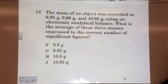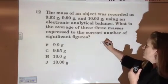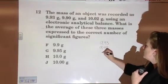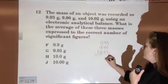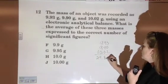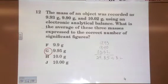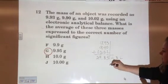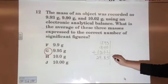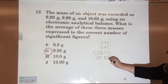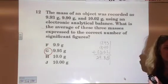Next one. The mass of an object was recorded as 9.93, 9.90, and 10.02 using an electronic analytical balance. What is the average of these three masses expressed in significant figures? G. 9.93, 9.90, 10.02. Add them. 29.85. Divided by 3 will give you 9.95. Is the 0 in 9.90 significant? Yes. When we add significant figures, if we add, we are looking at decimal places. If we had something over here like a 5, then we would round this up to 6. And we did not have that, so we were in significant figures.